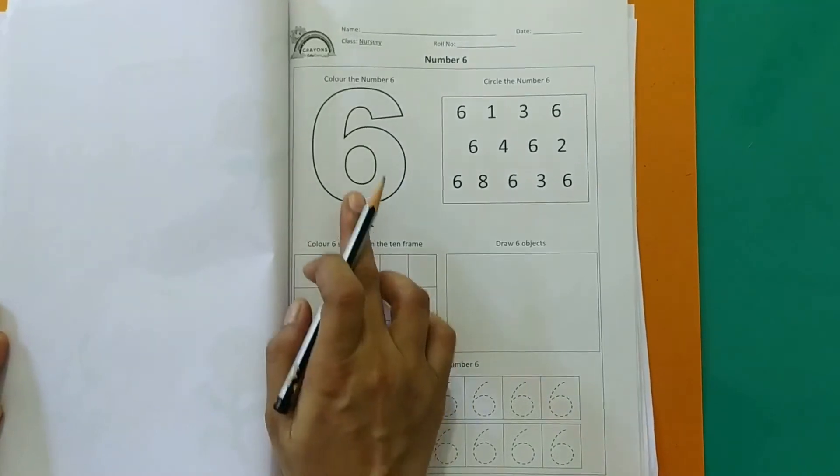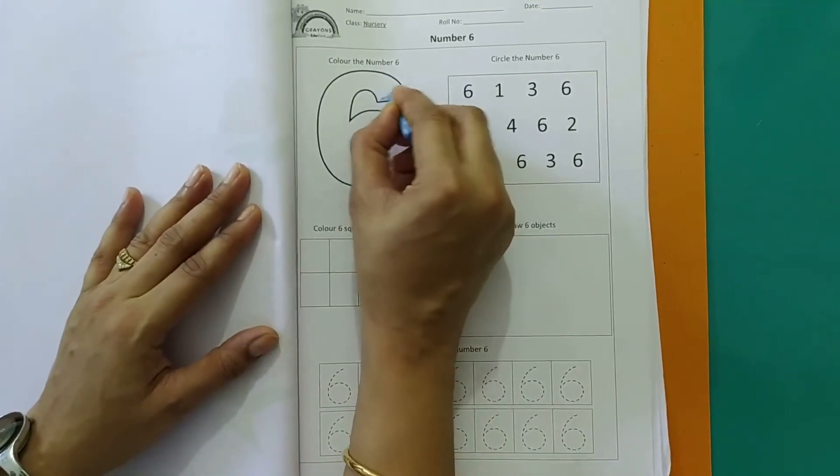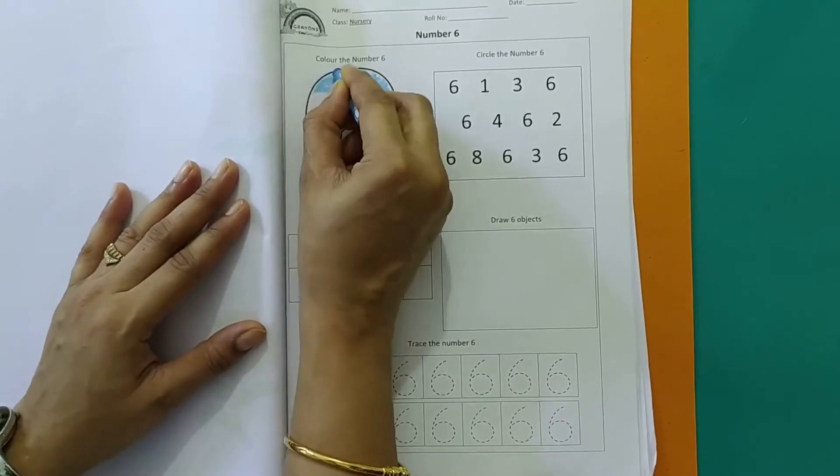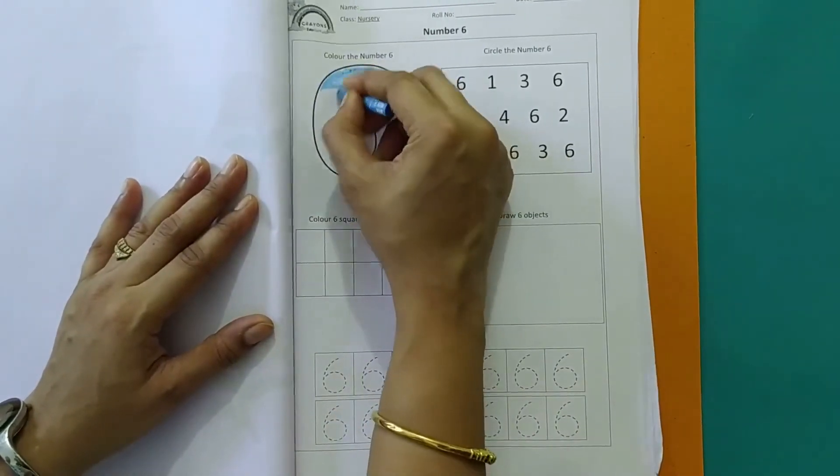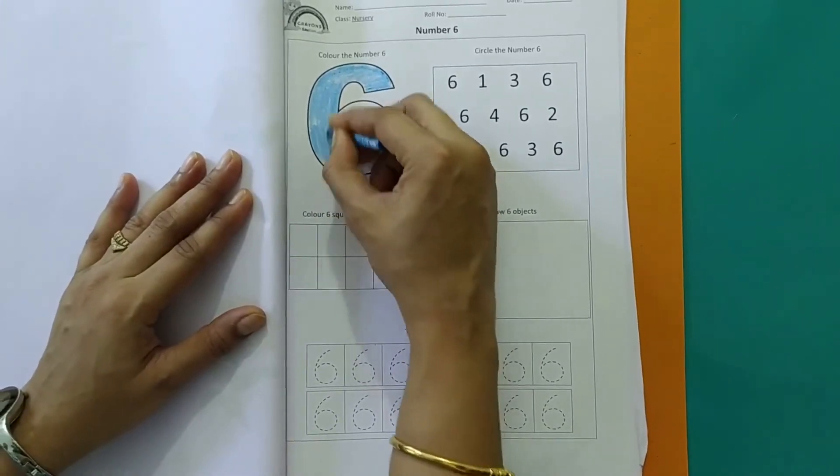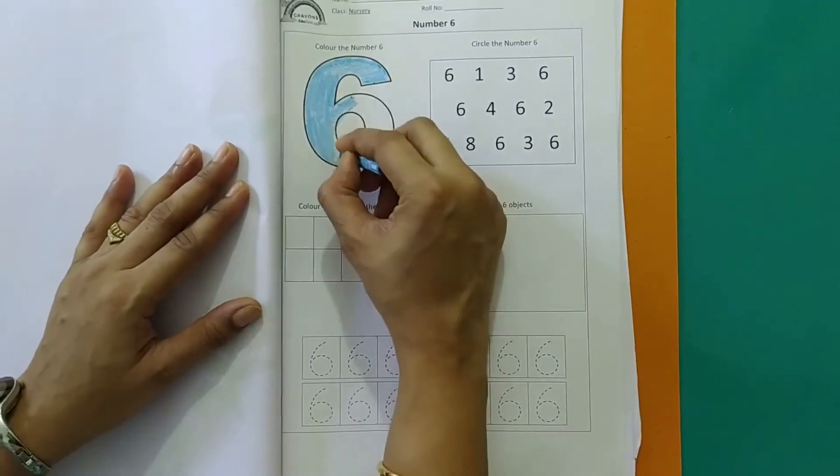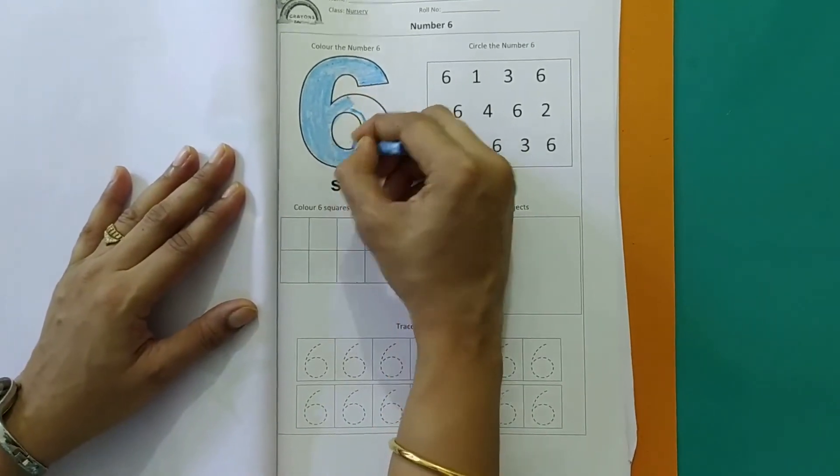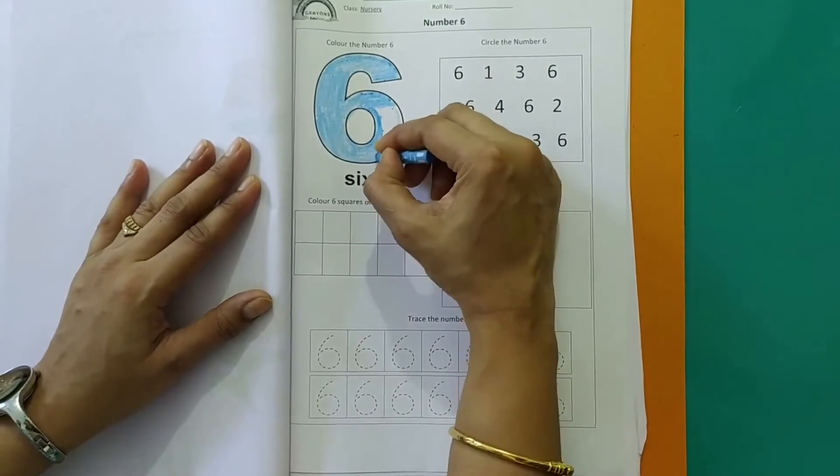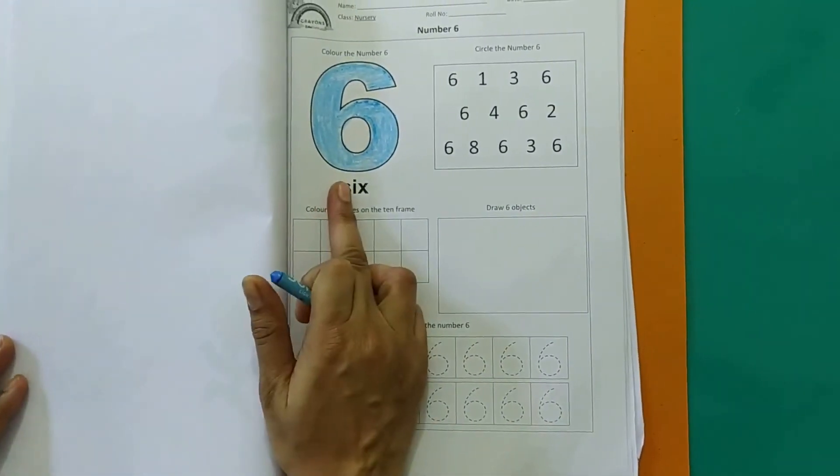So now first let's color the number 6. I'm using a blue crayon and I will color this number 6. You can use any color of your choice and color it neatly. So we have finished coloring the number 6.